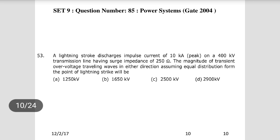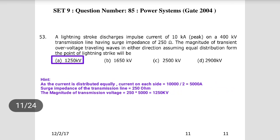Fifth question: a lightning stroke discharges an impulse current of 10 kilo-amps peak on a 400 kV transmission line having a surge impedance of 250 ohms. Find the magnitude of the transient overvoltage traveling wave in either direction, assuming equal distribution from the point of the lightning stroke. Since current is equally distributed, current on each side = 10/2 = 5 kA. Traveling wave voltage = 250 × 5 = 1250 kV.